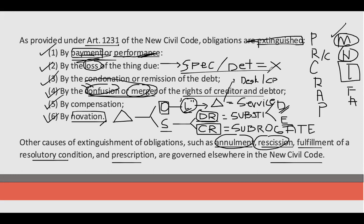However class, kung ang kanyang obligation is to deliver a generic thing — nag-discuss na natin ito class — and if it is a generic thing, it is replaceable. So kung replaceable siya, you can ask for delivery, you can ask for the performance even from other person at the expense of your debtor.